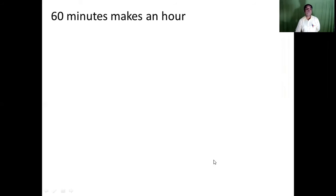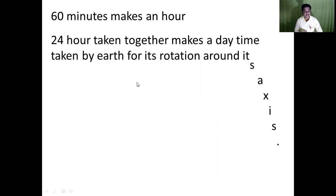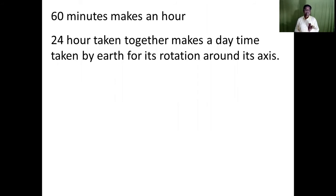Your hour hand will move from one digit to another digit in one hour. Do you know how much time the Earth takes for completing one rotation about its own axis? This time is taken as one day, and this one day is divided into 24 equal parts, and one part is known as an hour. This hour is divided into 60 parts known as minutes, and then every minute is divided into 60 equal parts known as a second. So the Earth requires 24 hours for completing one rotation about its own axis, and it is known as one day.